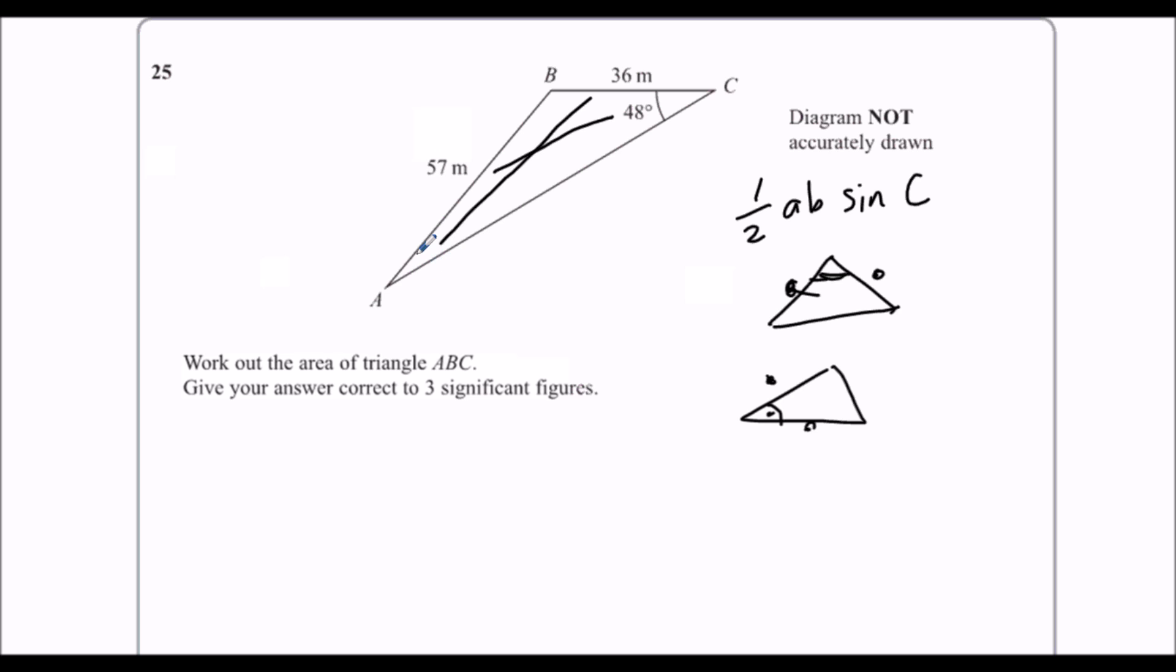So we've got, we're going to work out this angle here. The sine rule is, for angles, sin a over a equals sin b over b. Again, given to us on the formula page. So in our example, sin x, which we're working out, over 36 equals sin the other angle, 48, over 57.